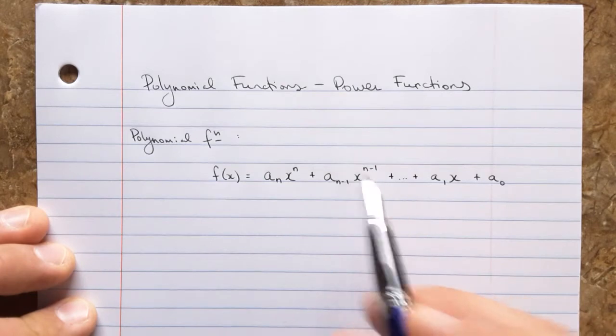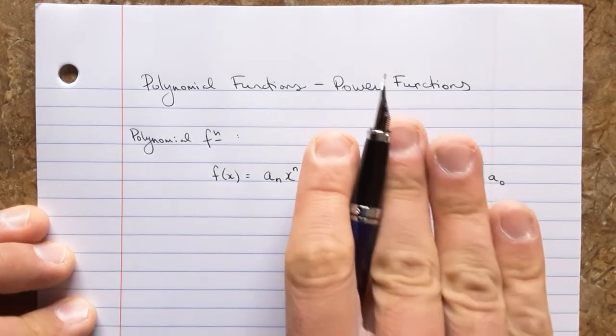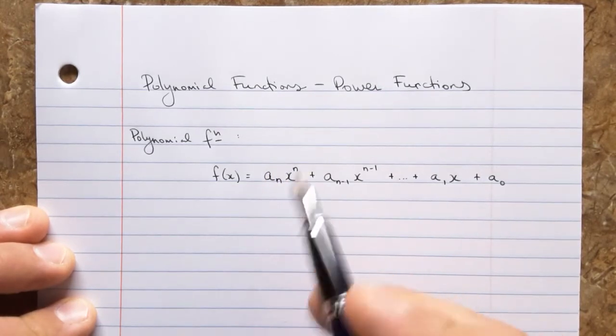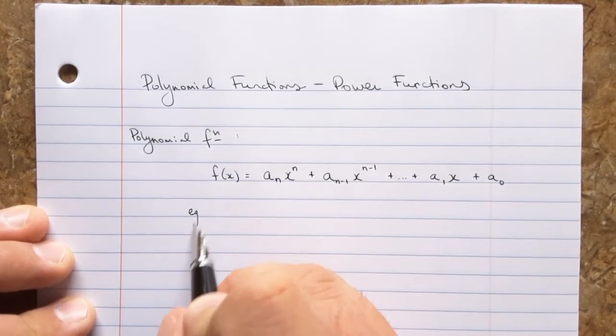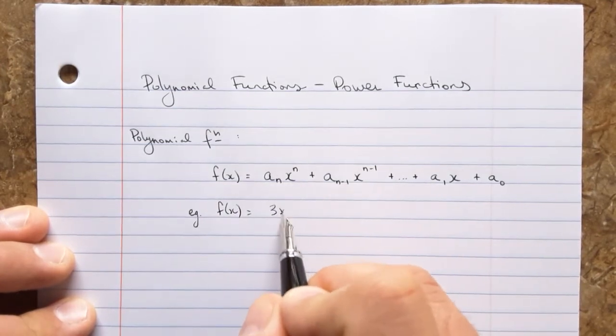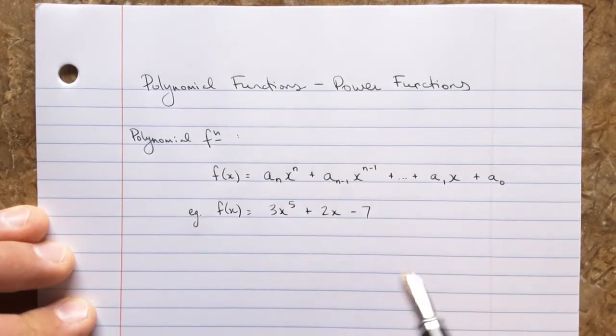Each of the a's is a coefficient. It's just a number. And any of them, except for the very first one, can be zero. So we don't have to have all of these terms. It could just be a single term at the front here.